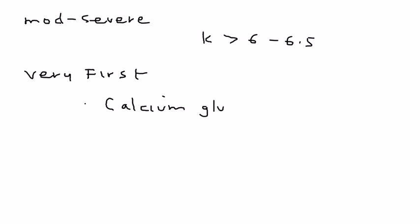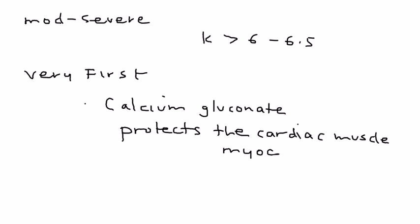You're looking at anything above six to 6.5. If potassium is greater than 6.5, that's actually pretty serious. The very first thing you need to do is give something known as calcium gluconate. The reason is because this protects the heart—in particular, the cardiac muscle, the myocardium—from any toxic effects of that hyperkalemia.